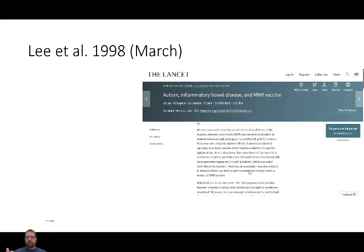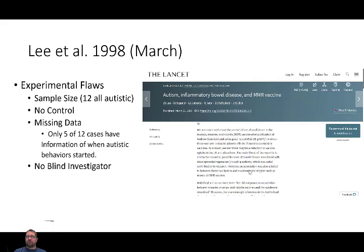The sample size — there are only 12 individuals, and all of them are autistic, so therefore there is no control. There are no children that are not autistic. So they weren't checking for these intestinal disorders in children that don't have autism. Is this MMR causing intestinal disorders in normal, non-autistic children? That question simply wasn't addressed.